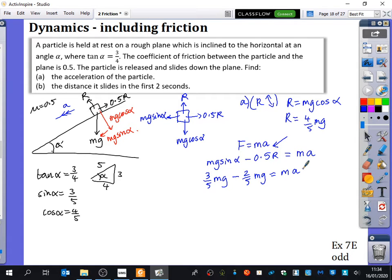Good. So it didn't matter about the mass at all. The acceleration is independent of the mass. It could be 5 kilograms, could be 100 kilograms. It's still going to have the same acceleration. So I can cancel out the m's. What's three-fifths g take away two-fifths g? One-fifths g. So the acceleration is a fifth g. If you want to, you can say that that is 1.96 meters per second squared.